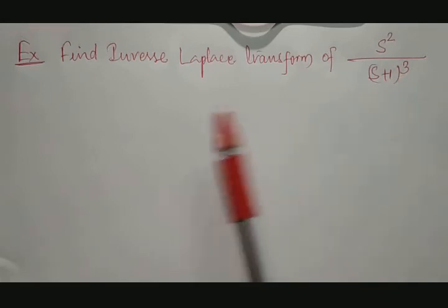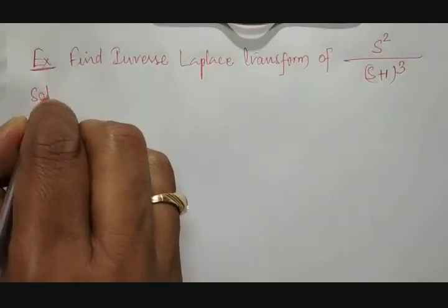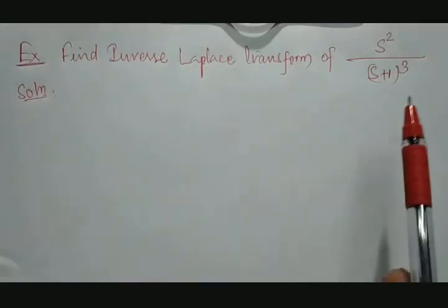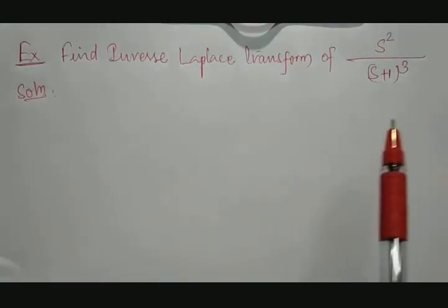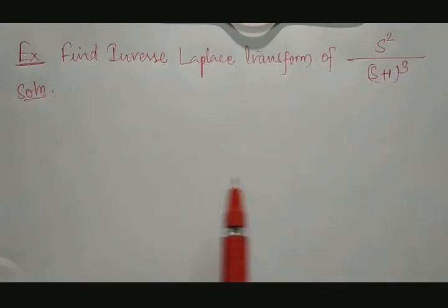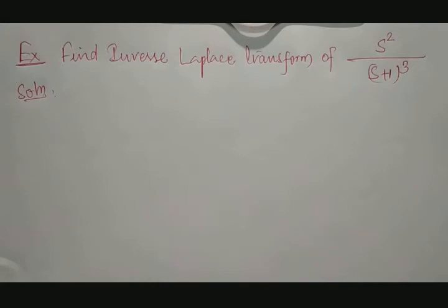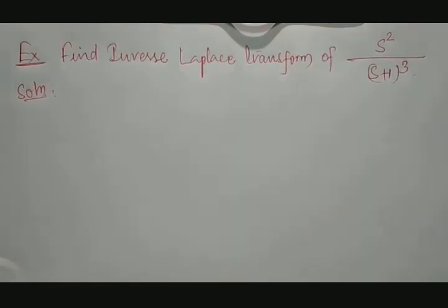In this example, if you observe, it is something like a quadratic format, but this quadratic format pattern is already resolved. Normally, if anything comes at the denominator in quadratic format, we try to convert it in terms of (s − a)² ± b², but that problem is already resolved.